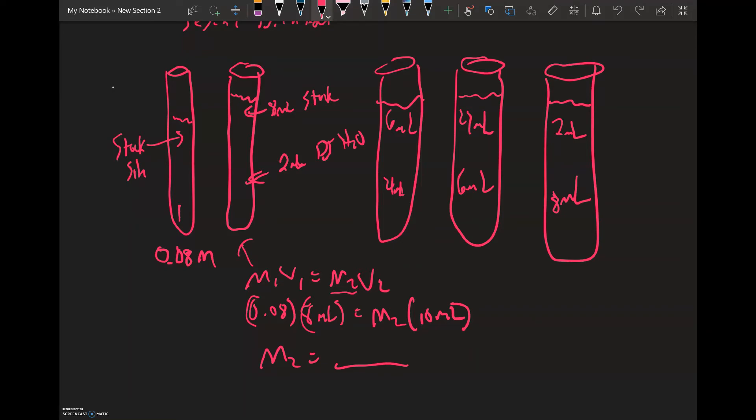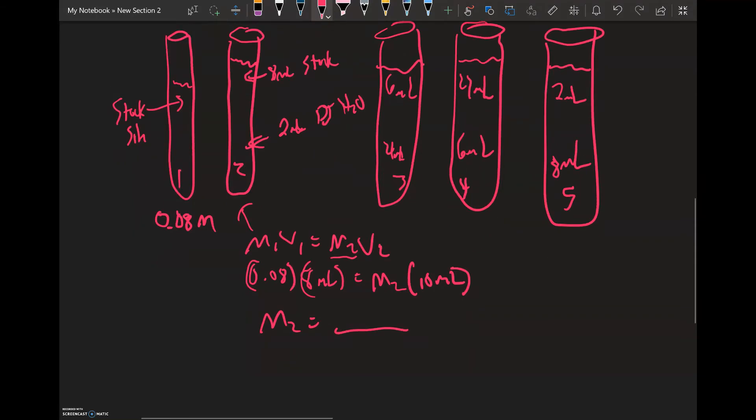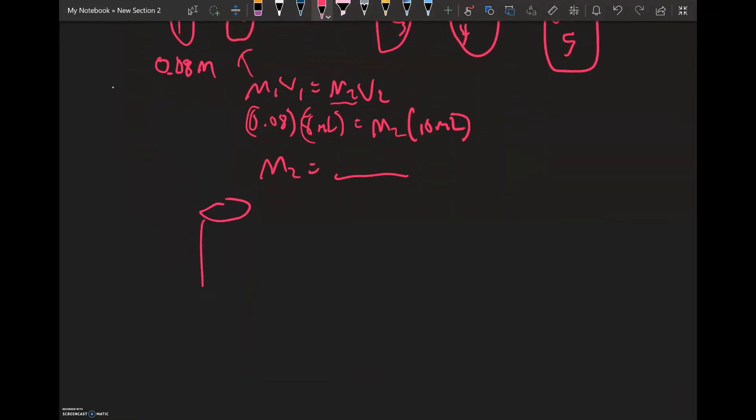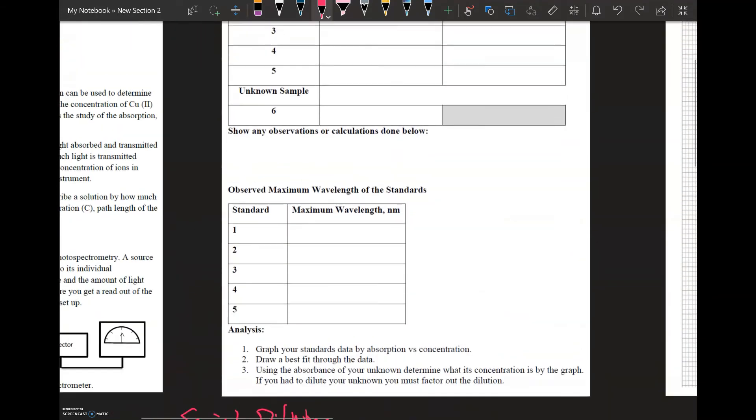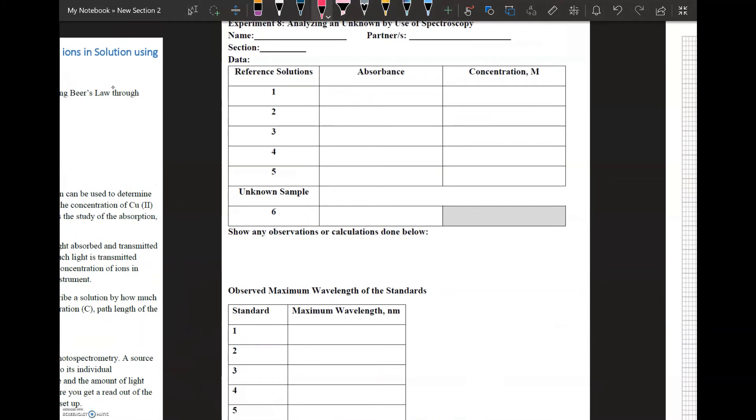We will have a sixth test tube. In your sixth test tube, you're going to have an unknown concentration. You're going to take these samples, place them into the spectrometer, and measure their absorbances. The concentrations, you're going to calculate these using M1V1 equals M2V2. The absorbance will be measured from the instrument.